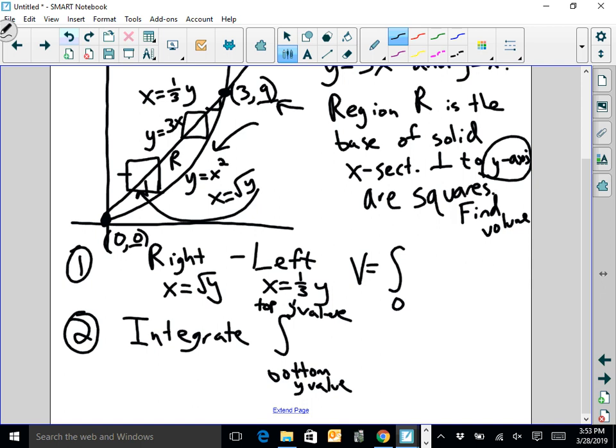So I go integral 0 to 9 of, now I have to do the area of the square. Well, this distance right here is right minus left. This distance right here is the y function on the right, which is root y, minus the left function, which is 1 third y.